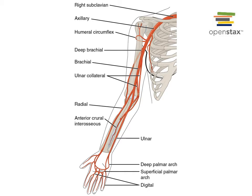When the subclavian arteries travel under the clavicle toward the limb, the name changes to the axillary artery, traveling through the axillary region. As the artery reaches the diaphysis of the humerus, it becomes the brachial artery. The brachial artery then gives off two major branches: the radial artery on the lateral side and the ulnar artery on the medial side. The radial and ulnar arteries are interconnected by anastomoses known as the palmar arches — a deep palmar arch and a superficial palmar arch — from which digital arteries branch off to supply blood to the fingers.